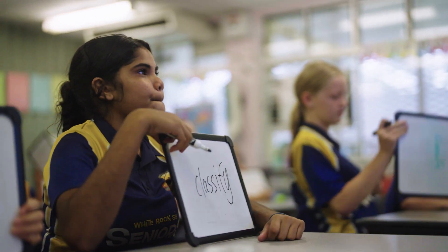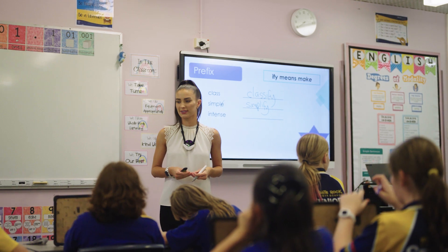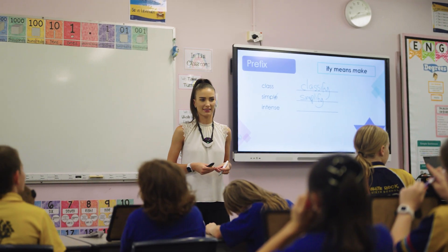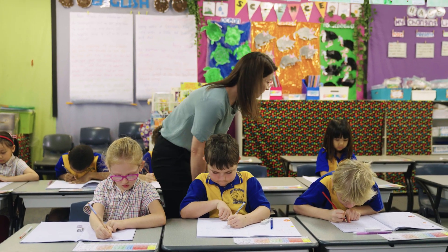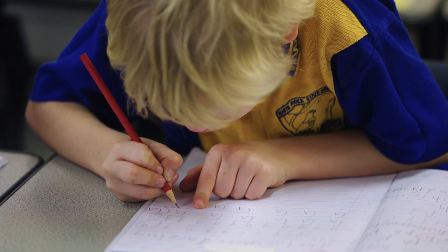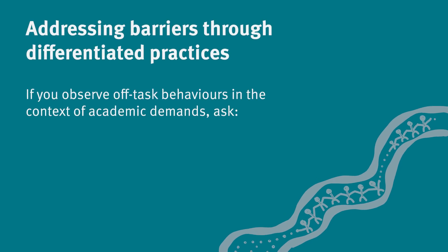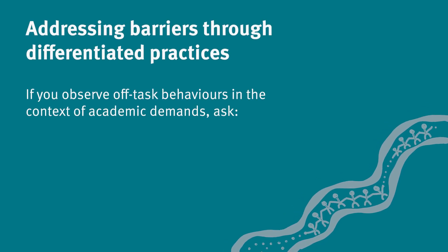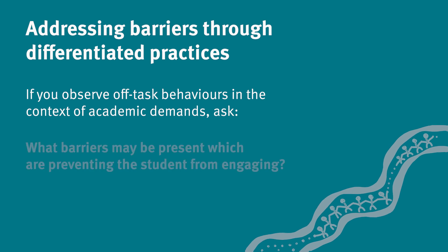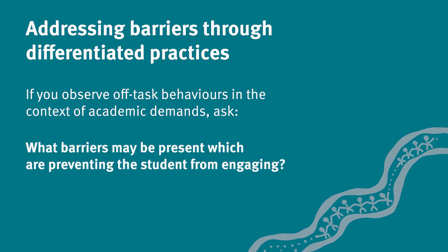Effective use of differentiation at the whole class level is important for student engagement and can help to prevent behavioural issues. Sometimes, behavioural issues are a result of barriers to engagement, such as a mismatch between the task and the student's current level, or students perceiving that they are unable to engage with the task. If you observe off-task behaviours in the context of academic demands, ask what barriers may be present which are preventing the student from engaging.